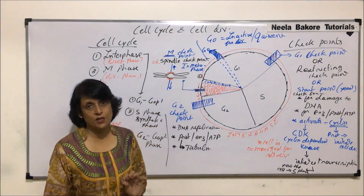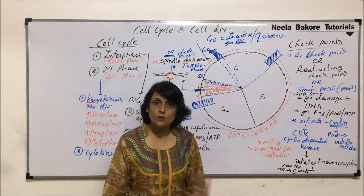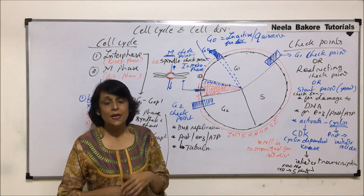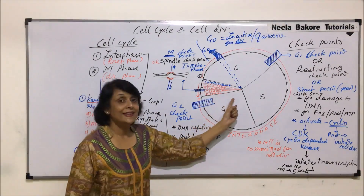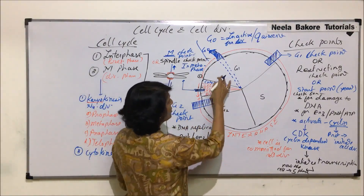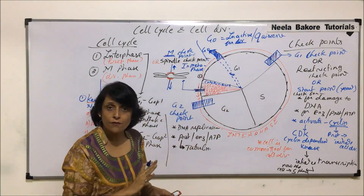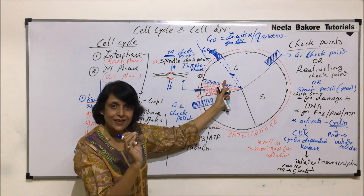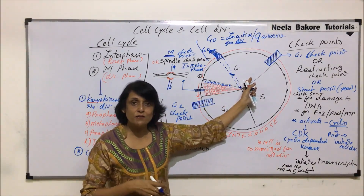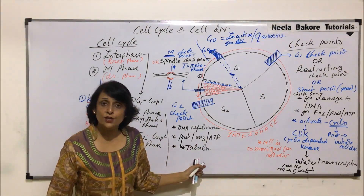There is one more small point: when the cell comes into G1 and all preparations are as per norms, but certain external conditions are non-favorable — such as temperature or nourishment — the cell can temporarily enter the G0 phase. In this quiescent zone, the cell waits. As soon as conditions become favorable, it re-enters the active part of G1 and continues with the cycle. This happens only when external conditions are not favorable.